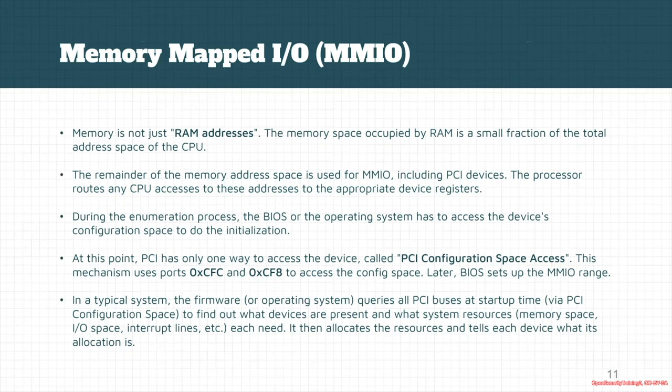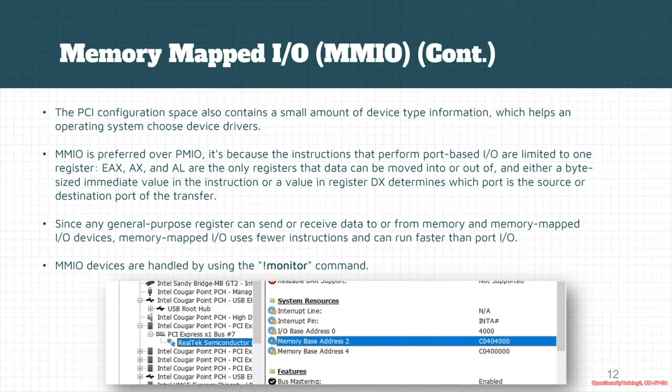In a typical framework, the BIOS or OS queries all PCI buses at startup using the PCI configuration space, finds the devices present, and configures system resources like memory space, IO space, and interrupt lines. It then allocates resources and tells each device about its allocation. The PCI configuration space also contains device type information that helps the OS choose the appropriate device driver.